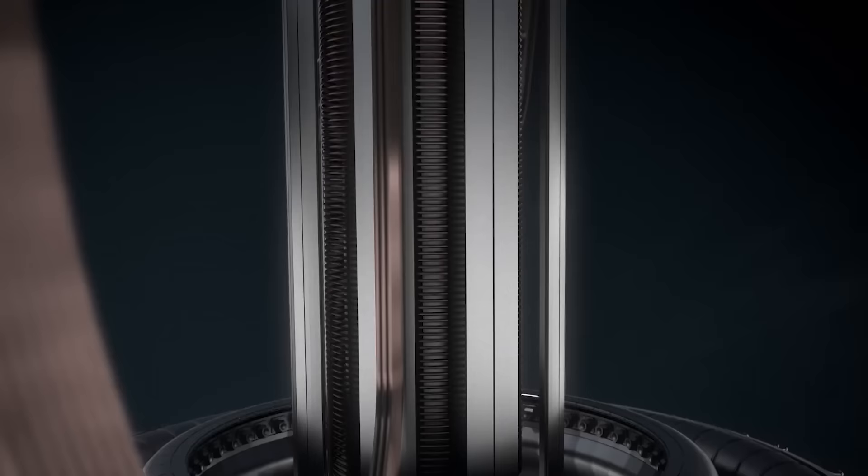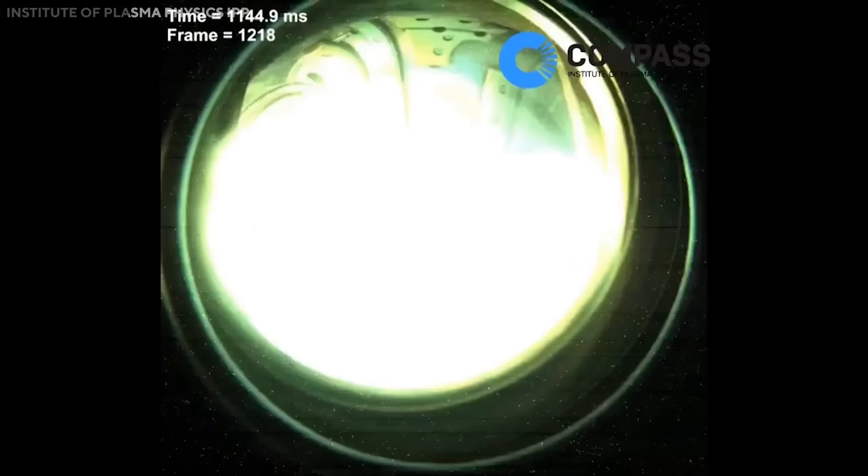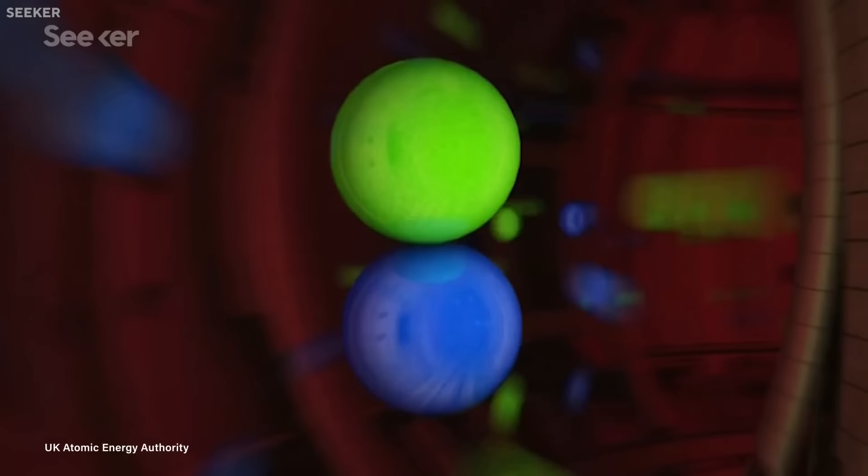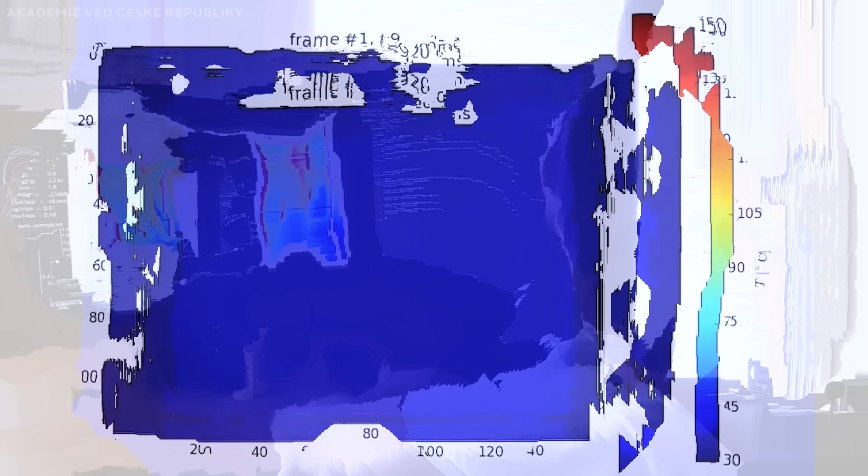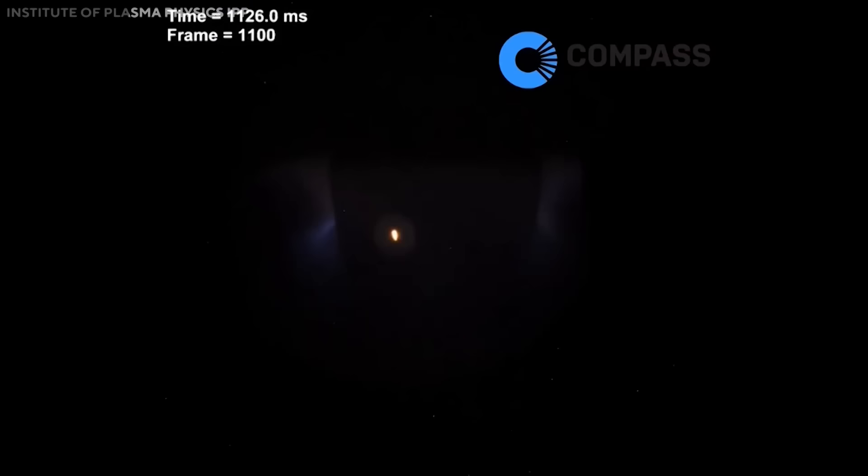There are different ways to achieve the Lawson Criterion, but the most promising one is using magnetic confinement. This method uses powerful magnets to create a donut-shaped magnetic field called a tokamak that traps and shapes the plasma, which is a state of matter where the atoms are ionized and separated into electrons and nuclei. The plasma is heated by injecting particle beams, microwaves, or electric currents. And the magnetic field prevents the plasma from touching the walls of the reactor, which cools it down and stops the fusion.